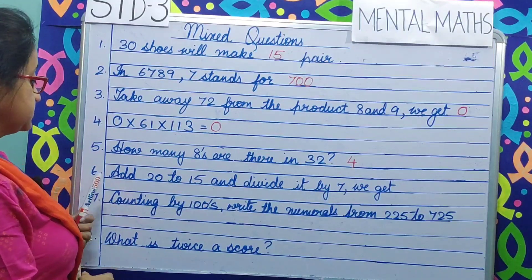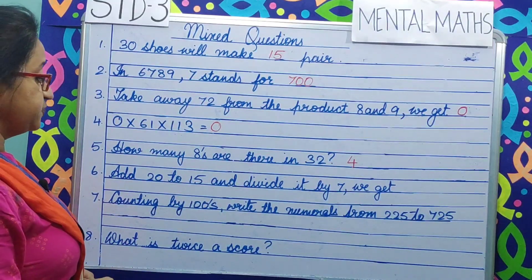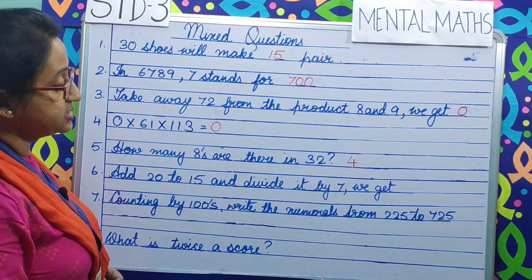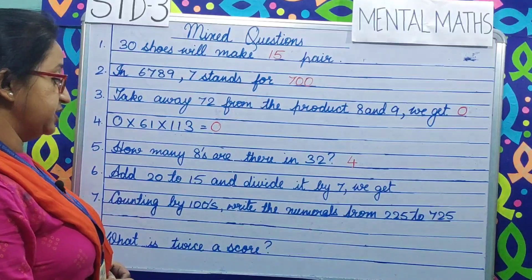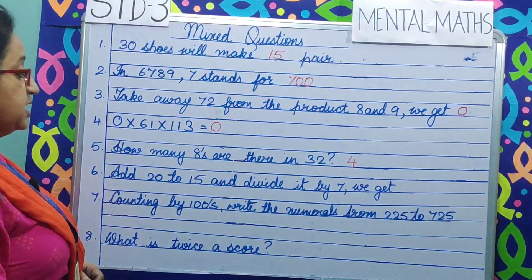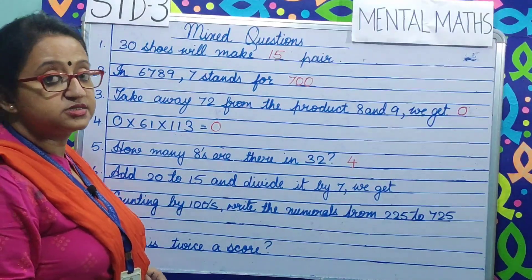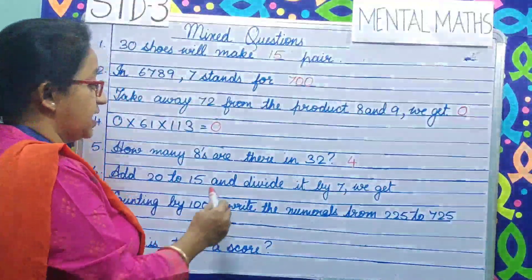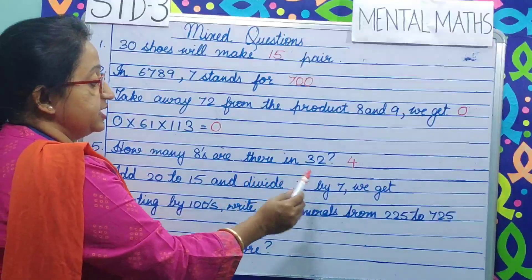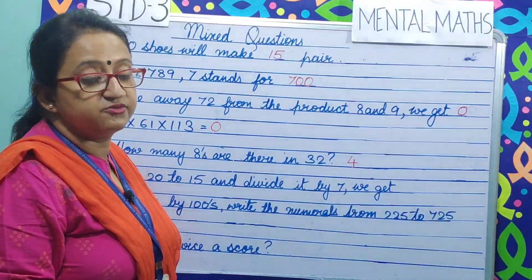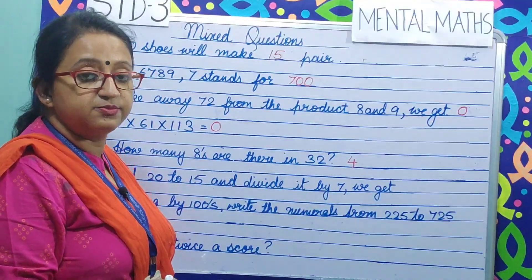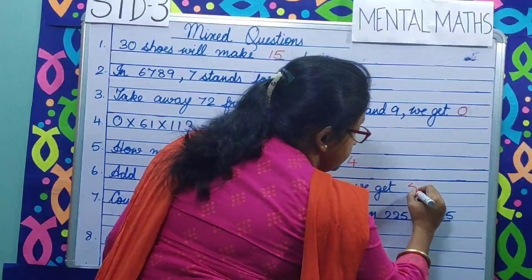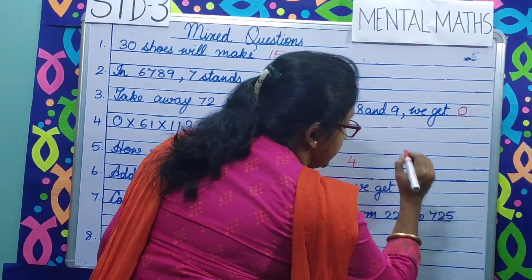Question number 6. Add 20 to 15 and divide it by 7. We get 20 plus 15 is 35, and 35 divided by 7 is 5.